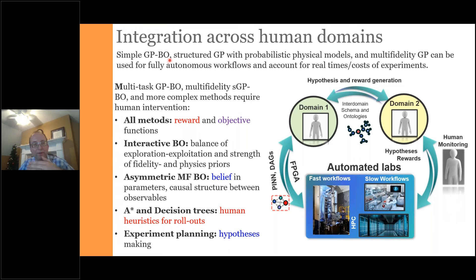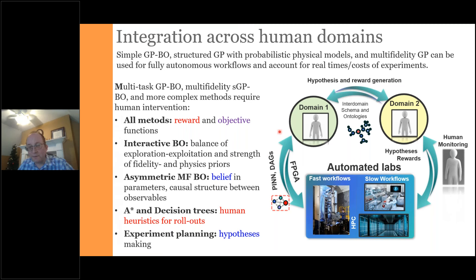The correct way forward is for the machine learning agent to control the microscope at the timescales and data volumes intrinsic to the instrument — meaning fast and large — while the human agent monitors the ML agent's behavior, adjusts policies, makes the agent more or less curious, and chooses exploration targets. This approach will become progressively more important as we integrate automated workflows across multiple domains, from simple Gaussian process Bayesian optimization to multi-task, multi-fidelity structured Gaussian processes.